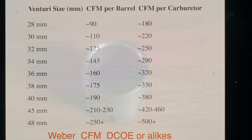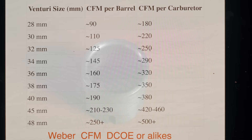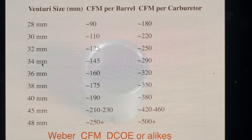Here we have a small table defining the CFM per barrel and per carburettor based on venturi size — the primary venturi, that little insert I just showed you. If we have a requirement of 260 CFM for the entire carburettor on my 4-cylinder engine, I'd need a carburettor providing at least 260 CFM. Since 250 is just below that, I step up to 290 CFM capability for the entire DCOE carburettor, giving 145 CFM per barrel. To achieve that I will need to fit a 34 mm venturi inside the carburettor. Obviously a 34 mm venturi isn't going to fit in a small DCOE 30 housing, so there are tables showing which primary venturi you can fit in which DCOE housing.